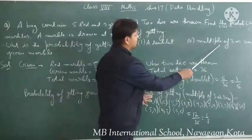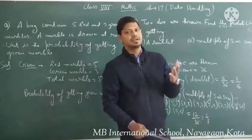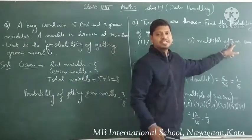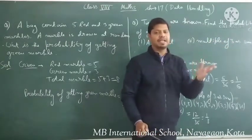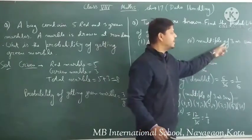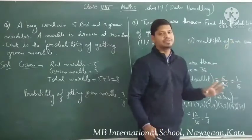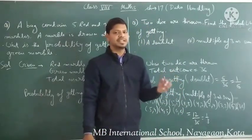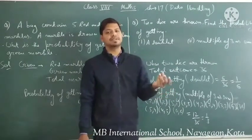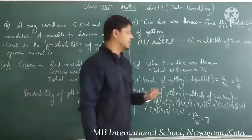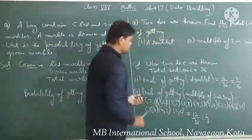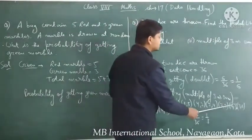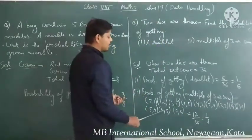Now the second part: multiple of 3 as a sum. This means when you add the numbers on both dice, the sum should be a multiple of 3. Multiples of 3 are 3, 6, 9, and 12. The favorable cases are: (2,1), (1,2), (5,1), (1,5), (4,2), (2,4), (3,3), (6,3), (3,6), (5,4), (4,5), (6,6).